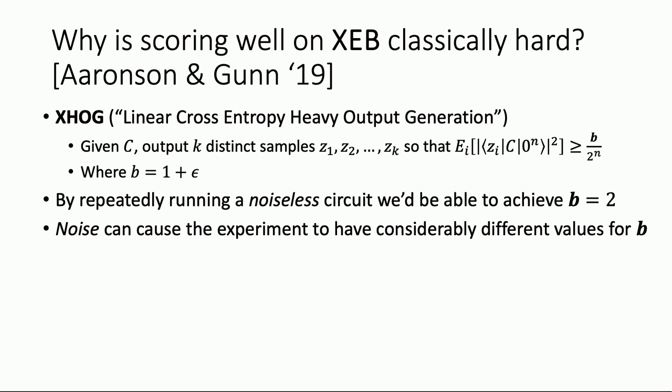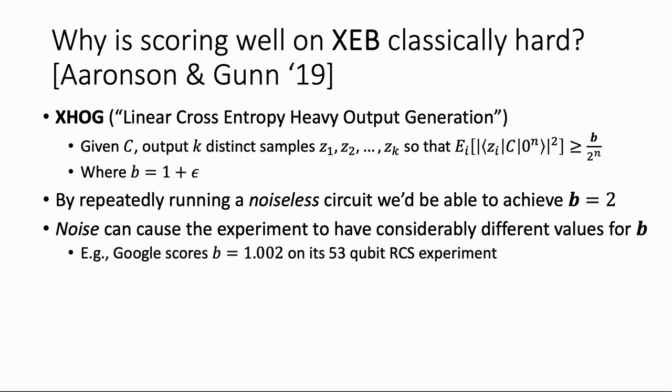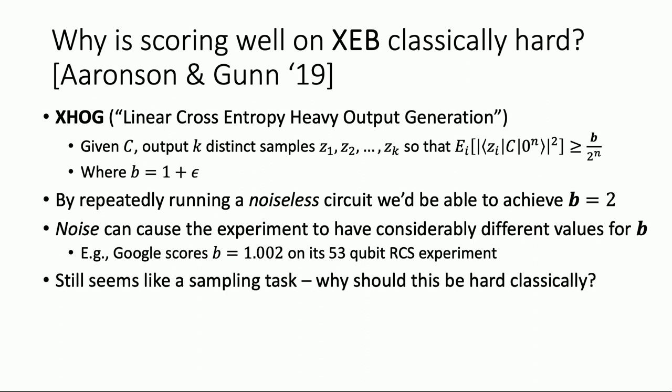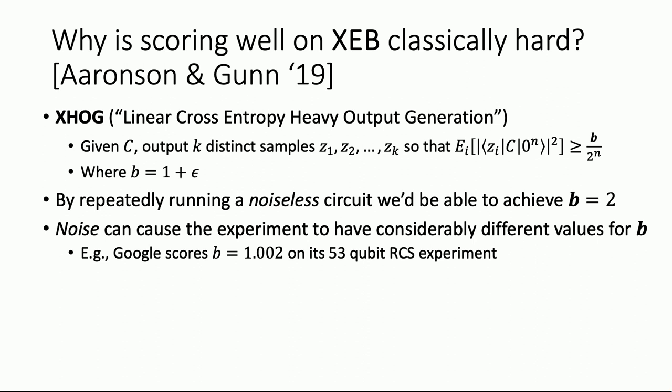At least so far, we're really talking about the noiseless case. If someone tells you to expect a constant value of B, that's a noiseless statement. Google scores 1.002 on its 53-qubit RCS experiment. This sounds like a very small number — people say they can't believe a hardness claim was made when you're so close to 1, which would be just the uniform distribution, like some guy sitting there with a random coin. But it's actually reasonably large if you're thinking about an exponential decay, which is the noisy realistic case.